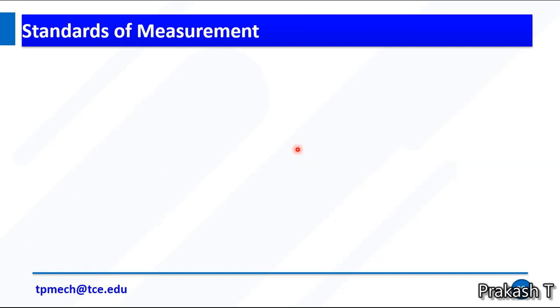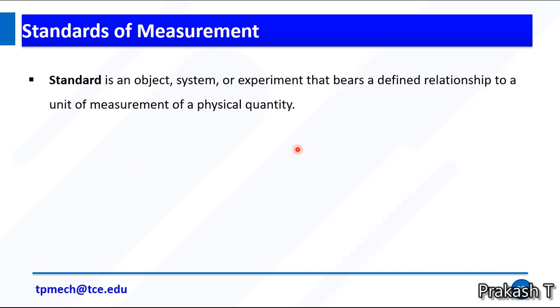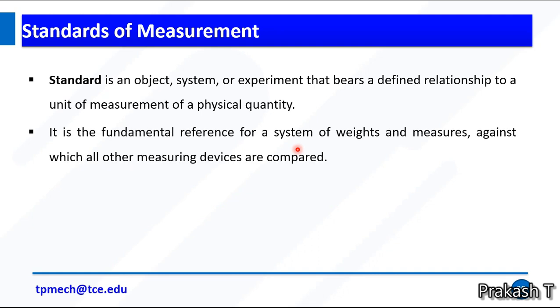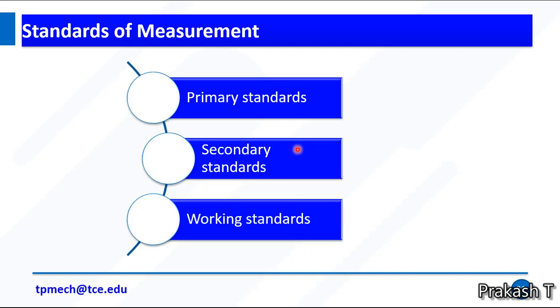Standards of measurements or measurement standards: a standard is an object, system or experiment that bears a defined relationship to the units of measurement of a physical quantity. It is a fundamental reference for a system of weights and measures against which all other measuring devices are compared. We have three types of standards: primary standards, secondary standards, and working standards.